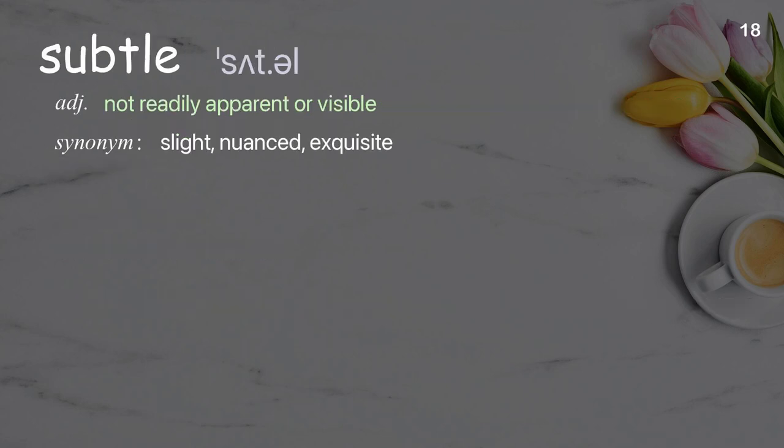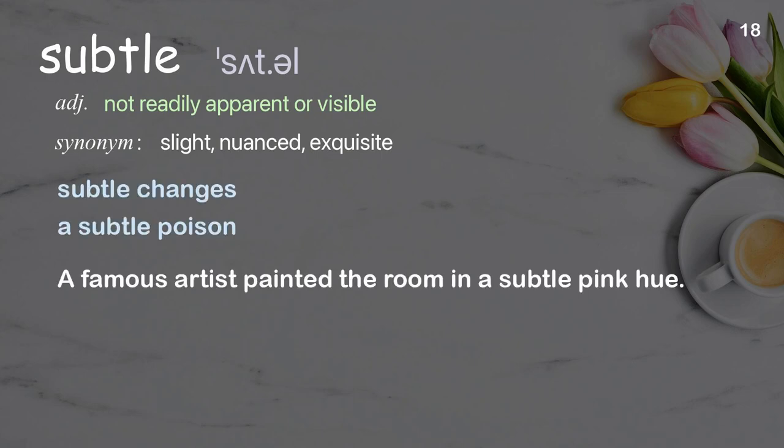Subtle: Not readily apparent or visible. Examples: Subtle changes. A subtle poison. The room was painted in a subtle pink hue.